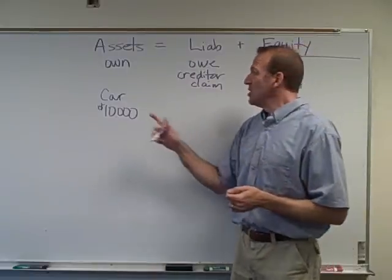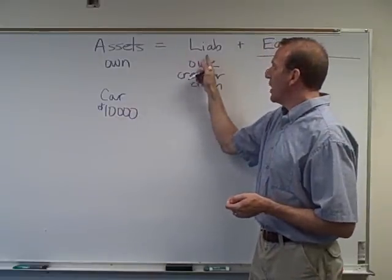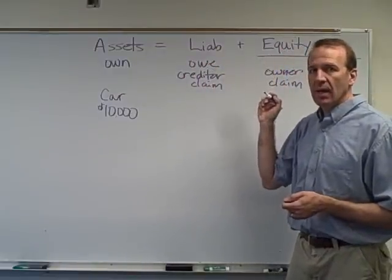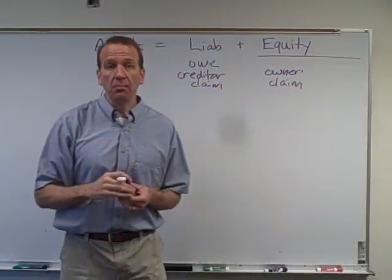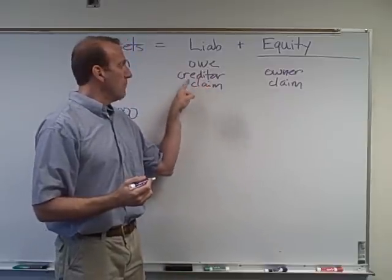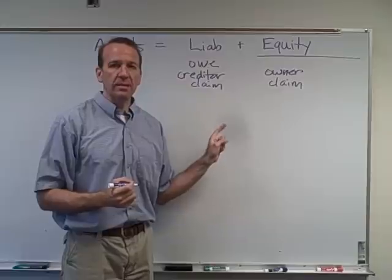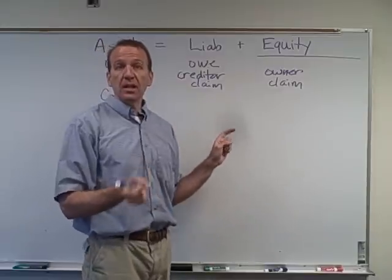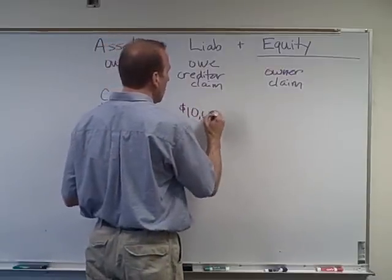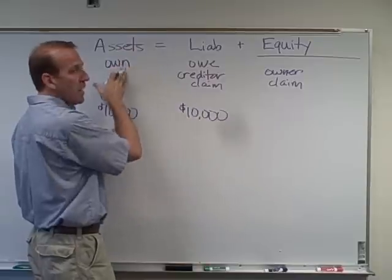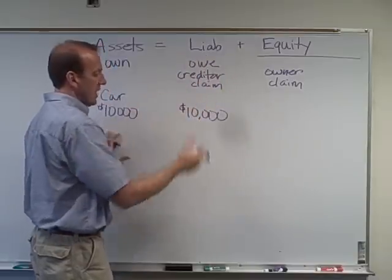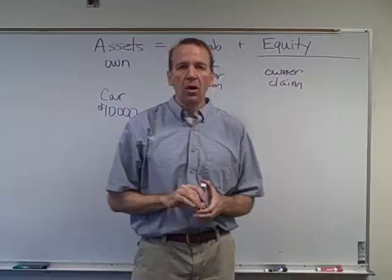Now, how did the business get this car? It doesn't just appear. We either have a liability or we have equity on the other side of the equation. We could have gone to the bank and borrowed $10,000 — that would be a liability, because the bank has a claim on that car. If we don't make payments, they'll repossess it. So our accounting equation is in balance: assets equal $10,000 and liabilities equal $10,000.